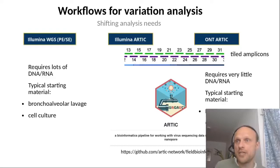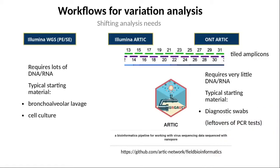The whole analysis needs of the world have shifted. Illumina whole genome sequencing was the method of the early days, but it has the disadvantage that it requires a lot of starting material — RNA in that case, SARS-CoV-2 being an RNA virus. The typical starting material is either bronchoalveolar lavage fluid from patients, requiring very invasive treatment, or cell culture, which requires a long time to passage the virus through multiple generations. So Illumina whole genome sequencing doesn't really scale well to the throughput needs of the world today when national genome surveillance projects aim at sequencing 5% of all SARS-CoV-2 cases in a country.